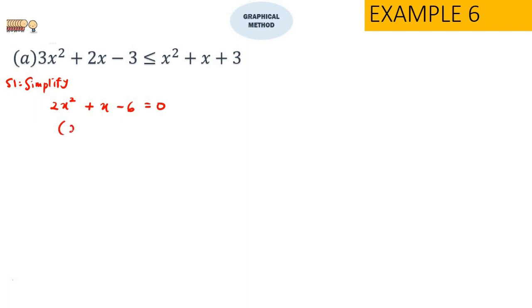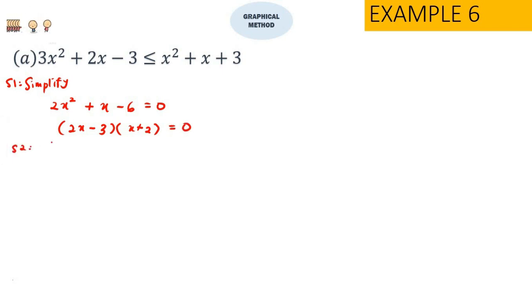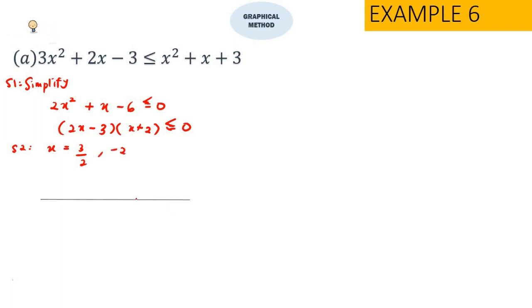Simplifying this one, we factorize and set each factor equals to 0. So finding x by equating each factor to 0 one by one, we get x equals 3 over 2 as well as negative 2. Next, we draw them on a number line.